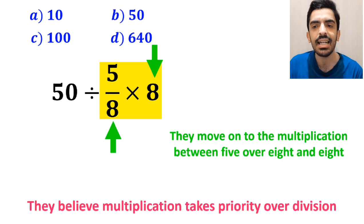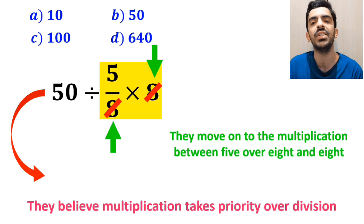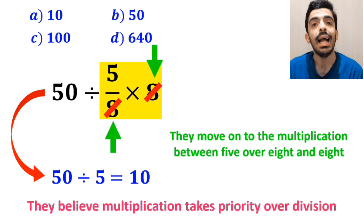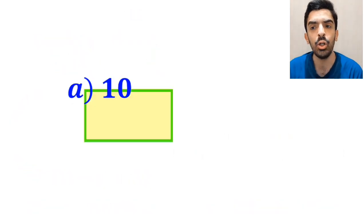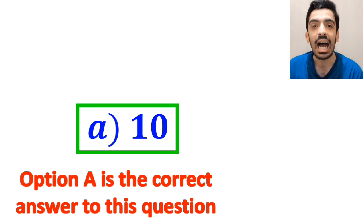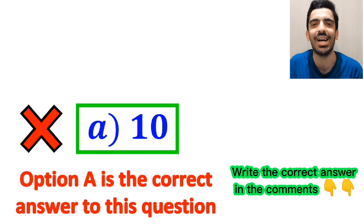As you can see in the image, they simplify the number 8 with the 8 in the denominator and instead of the original expression they write 50 divided by 5, which finally gives them the answer 10. Immediately they conclude that option A is the correct answer to this question, but I have to say we were tricked and it's not the correct answer.